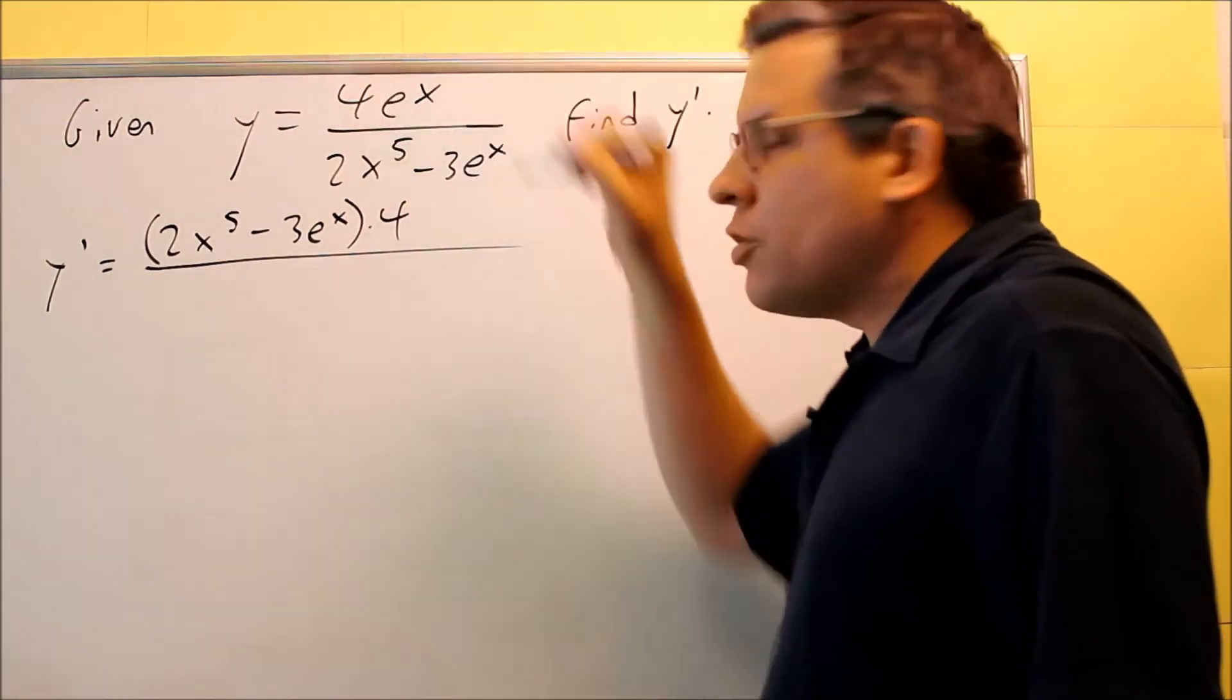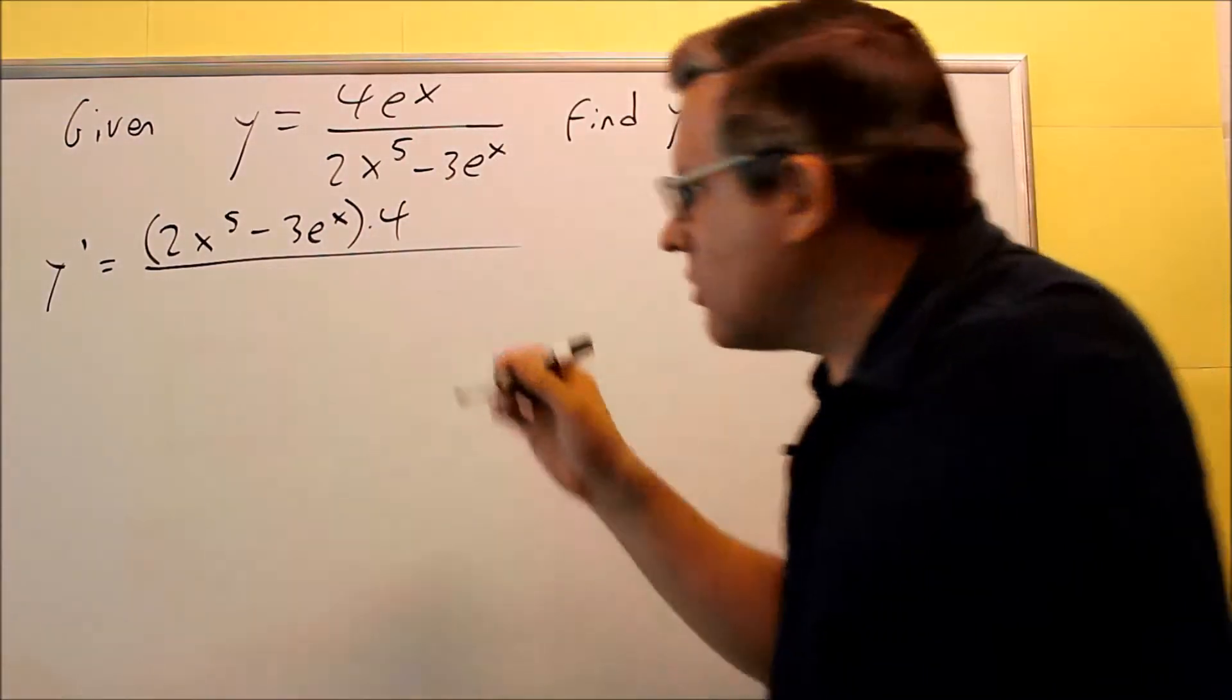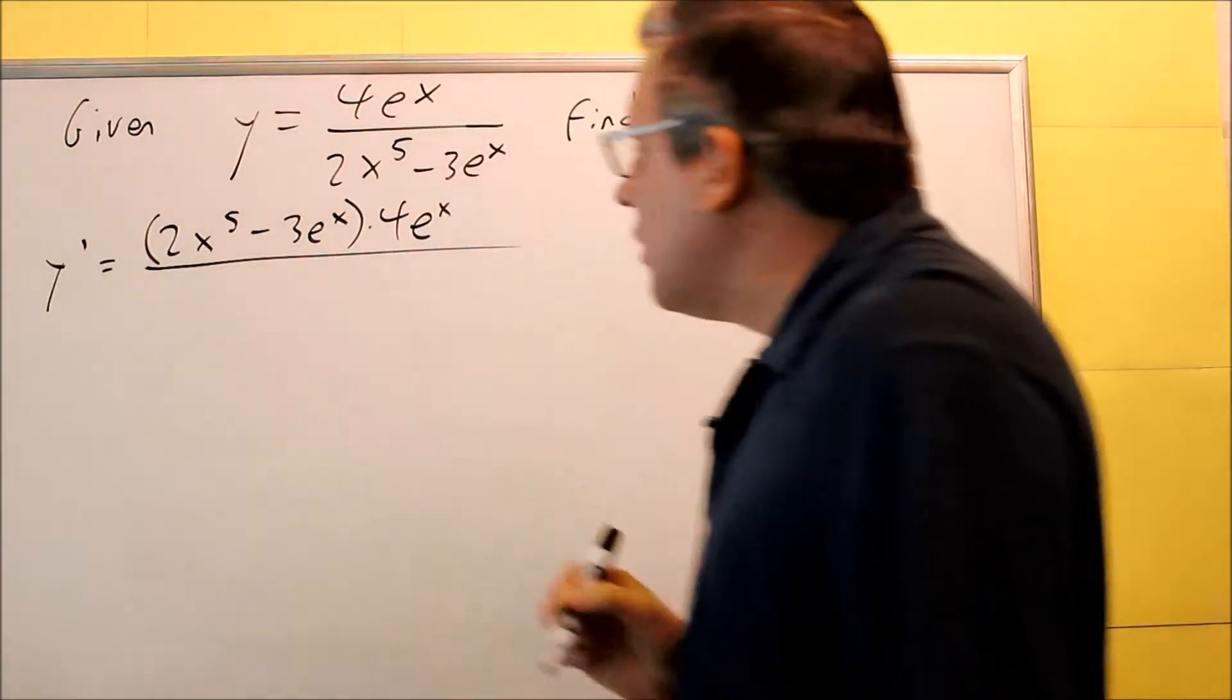So when you do that, you bring down the 4, the derivative of the e to the x is itself. So we write e to the x.